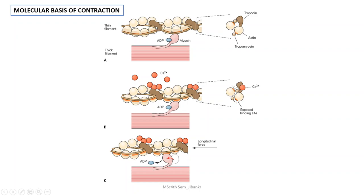Troponin C is the calcium-binding subunit of troponin, and as such this subunit is the calcium sensor. The initiation of muscle contraction starts with an increase of calcium in the cytosol, and this calcium binds to troponin C.